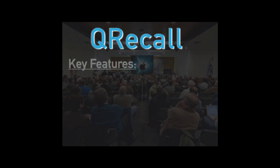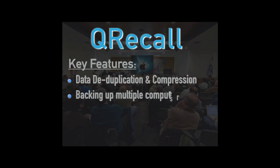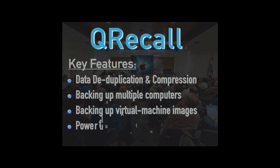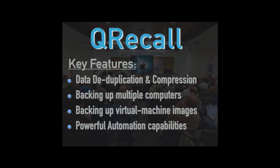QRecall has a couple of unique features that make it very different. The first one is data deduplication and compression. QRecall never, ever stores anything twice. It's not really file-oriented — it's data-oriented. When it sees a file or data, it divides it up into chunks called quanta — I think about 4K blocks. It then looks in the archive to see if it already has that particular quanta. If it does, it doesn't matter what file it was in, what operating system, or what computer — it won't store it again.